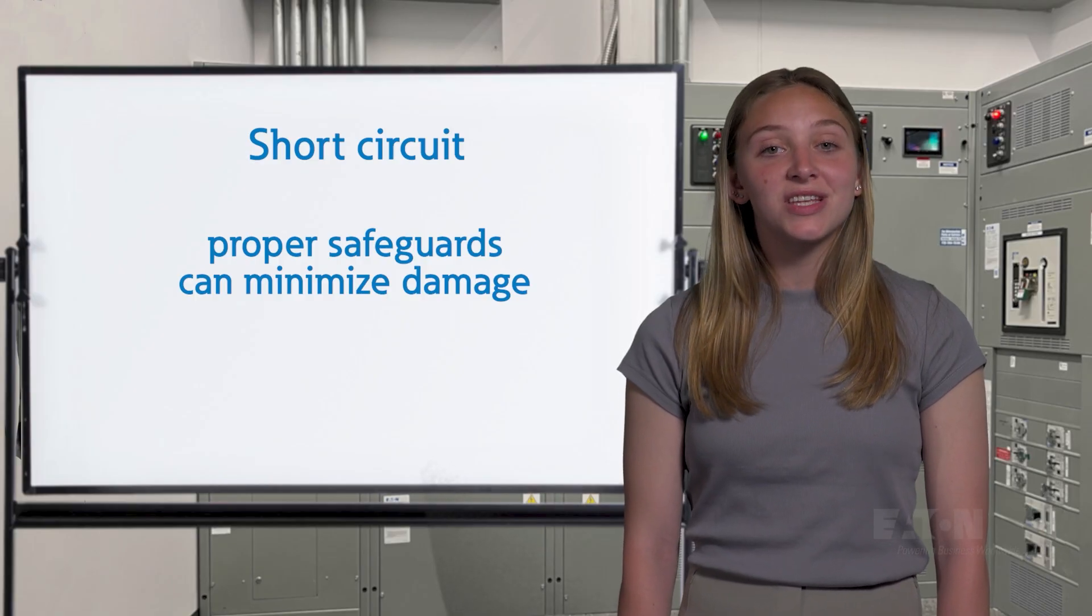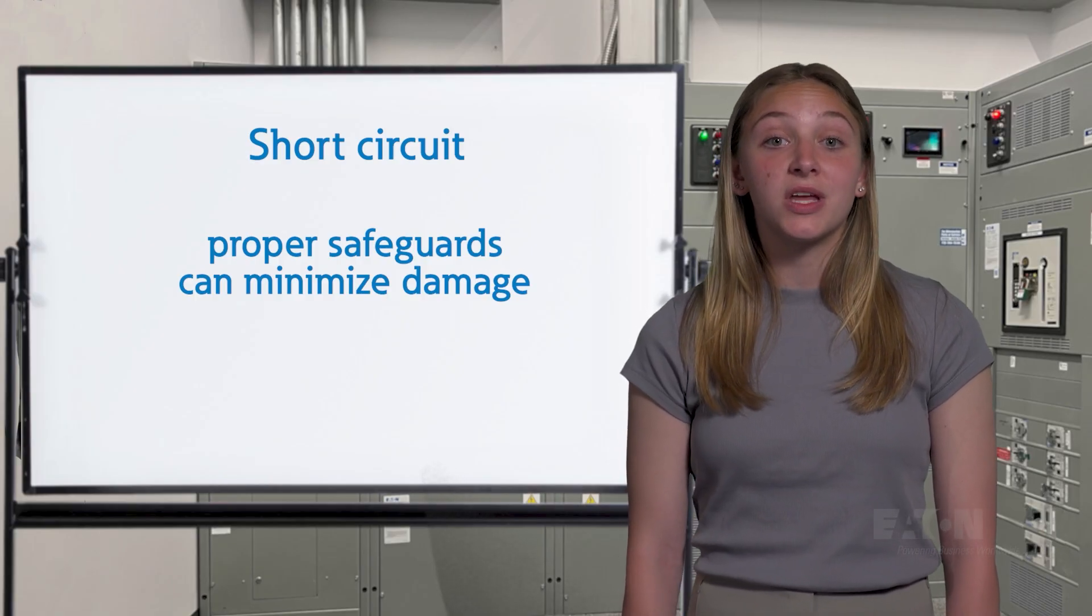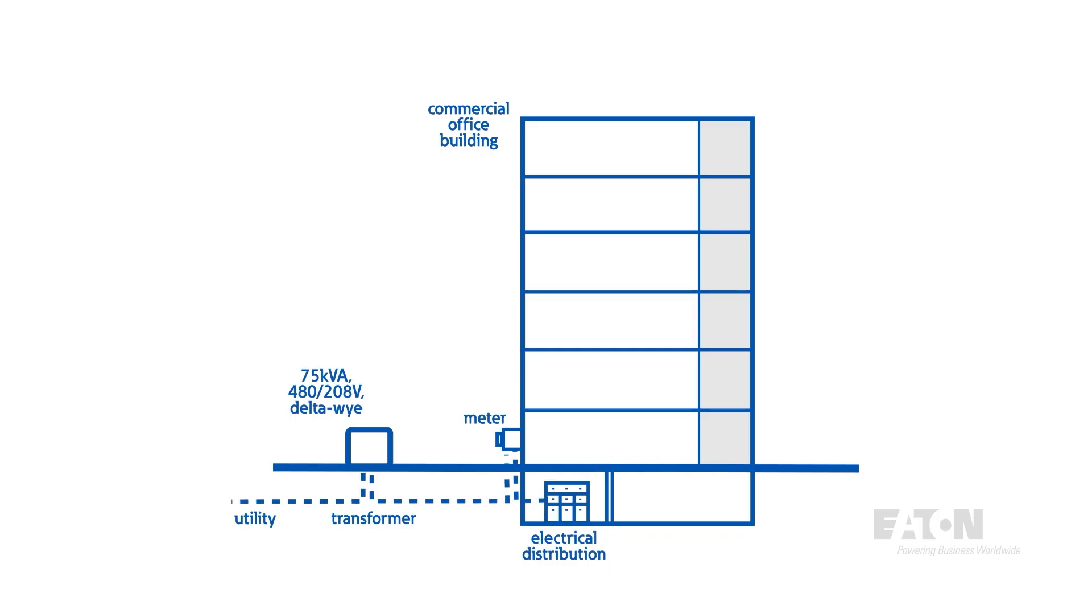This usually starts with understanding how much fault current is available in a system. Imagine a 75 kVA, 480-208 volt delta-Y transformer feeding a commercial building. From this perspective, right after the secondary, the entire building is the load that draws current.